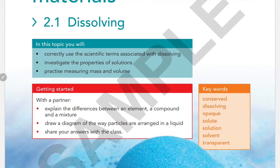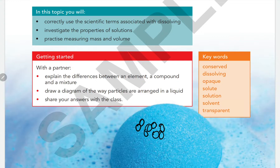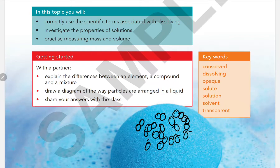In a mixture, there is no chemical bonding between the components, so it is easy to separate them. In a liquid, particles are touching each other but they are not in an orderly arrangement — they can slide past one another.